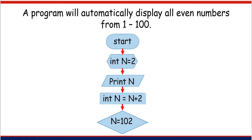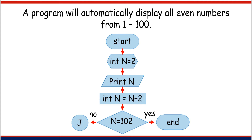After that, a decision symbol will appear. It will decide whether the program will continue or not. A decision symbol always has two destinations: yes and no. Once the condition is already achieved, the flowchart will end. If not, you have to put an entry on-page connector, then write the exit on-page connector and connect it to the flowlines leading to print n to repeat the process.